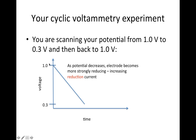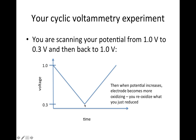As you scan this potential, the potential on the working electrode keeps decreasing, which means it's going to be more and more strongly reducing, and eventually your analyte gets reduced at the electrode and you get a reduction current. Then when you turn things around, the electrode becomes more and more oxidizing, and so eventually what you measure is oxidation of your analyte at the surface of the electrode, and you measure an oxidation current.